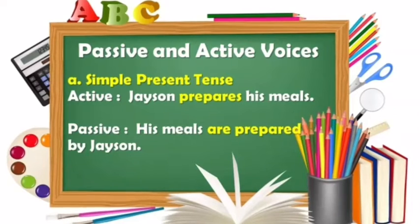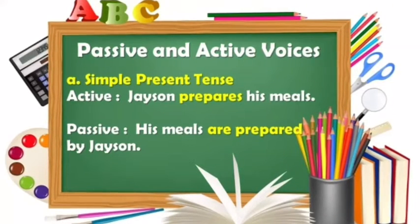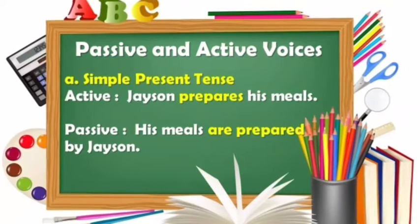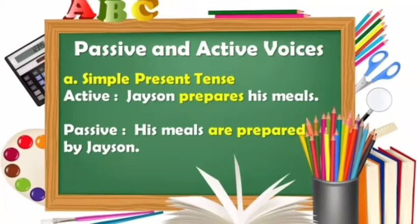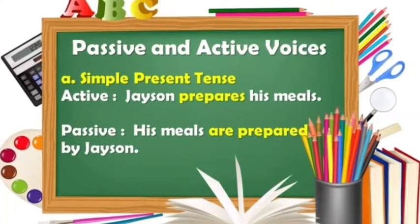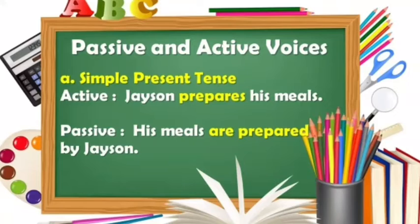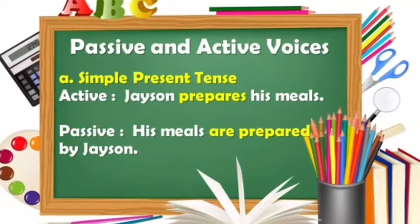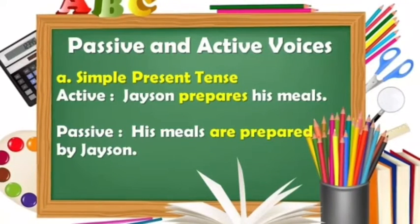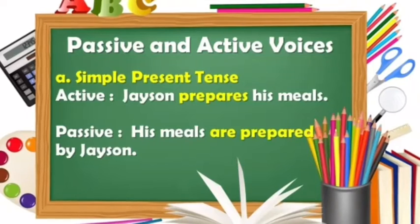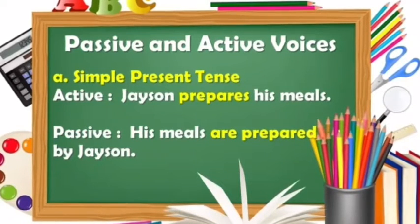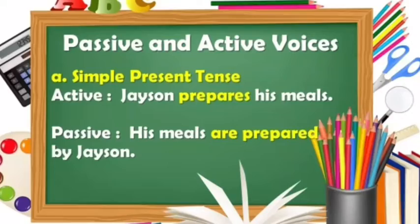Let's have an example in simple present tense. In active voice: 'Jason prepares his meals.' Jason is the subject, prepares is the action, and meals is the object. If we transform it into passive voice: 'His meals are prepared by Jason.' Meals is the object, are prepared is the action, and Jason is the subject introduced by the preposition 'by.'